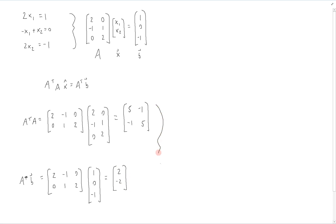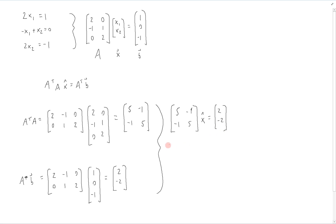So now we have all the pieces that we need. We can rewrite our system as 5, negative 1, negative 1, 5 — which is A transpose A — times x-hat is equal to A transpose b, which is 2, negative 2. We can write this as an augmented matrix and perform row reduction.